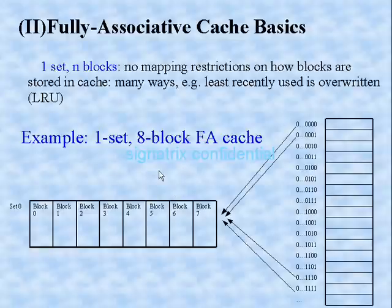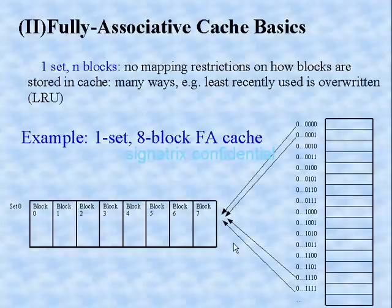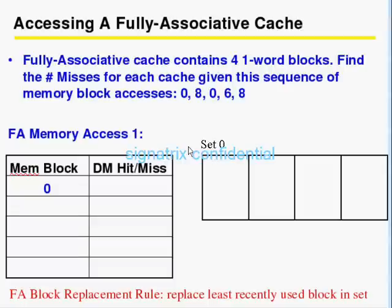We'll come back to this definition after seeing this example. Here we are having one set, eight blocks — a fully associative cache. Now these are all mapped together, like this: 0, 0, 2, 0, 0, and 0, 0, 0, 1.